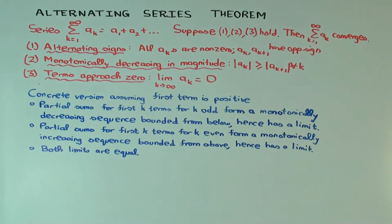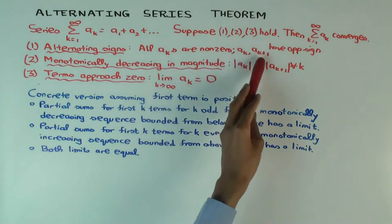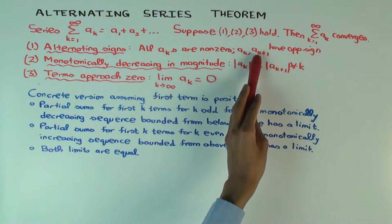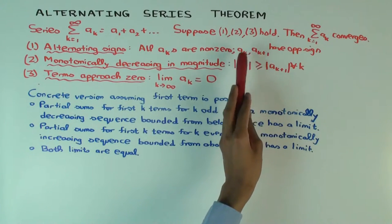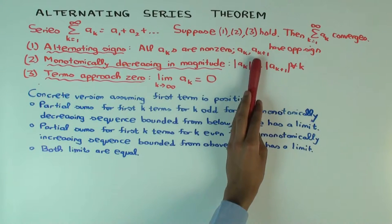The first condition is alternating signs. The alternating signs condition says that all the a_k's are non-zero and any two adjacent terms have opposite sign — so if one is positive, the other is negative.